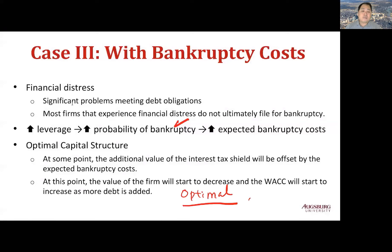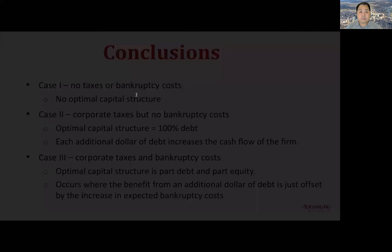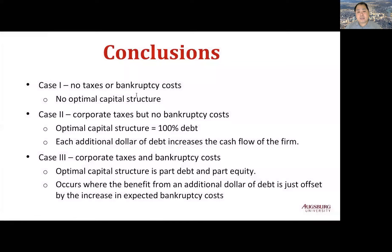At this point, firm value will start to decrease and WACC will start to increase as more debt is added. The graph shows there should be a D* — an optimal amount of debt. The problem is we know it exists in theory but don't know how to find it in the real world, which is the most serious limitation of optimal capital structure theory. So many firms simply assume that good competitors have this optimal capital structure and try to benchmark and follow them. In conclusion, MM1 and MM2 say: without taxes and bankruptcy, capital structure doesn't matter; with taxes, higher leverage is always good; and with taxes and bankruptcy, there should be a certain leverage that maximizes firm value and minimizes WACC.